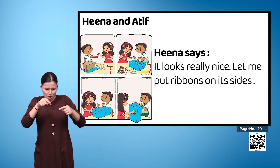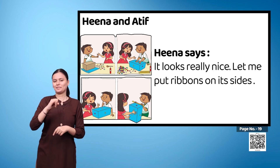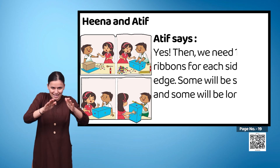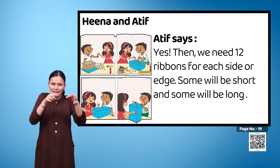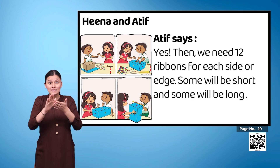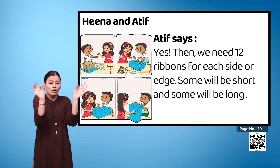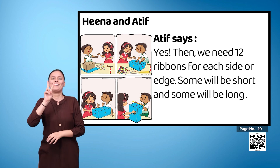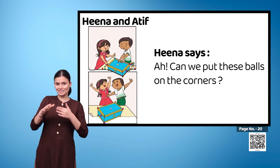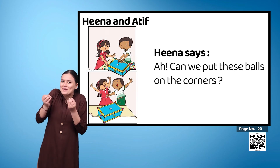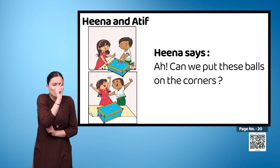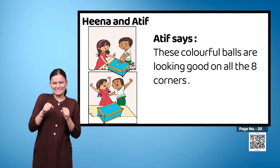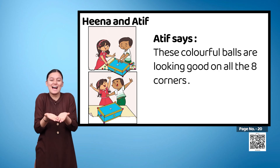Heena says: 'It looks really nice. Let me put ribbons on its sides.' Atif thinks and replies: 'Yes, then we need twelve ribbons for each side or edge — some will be short and some will be long.' Heena says: 'Can we put these balls on the corners?' Atif replies: 'These colorful balls are looking good on all the eight corners.'